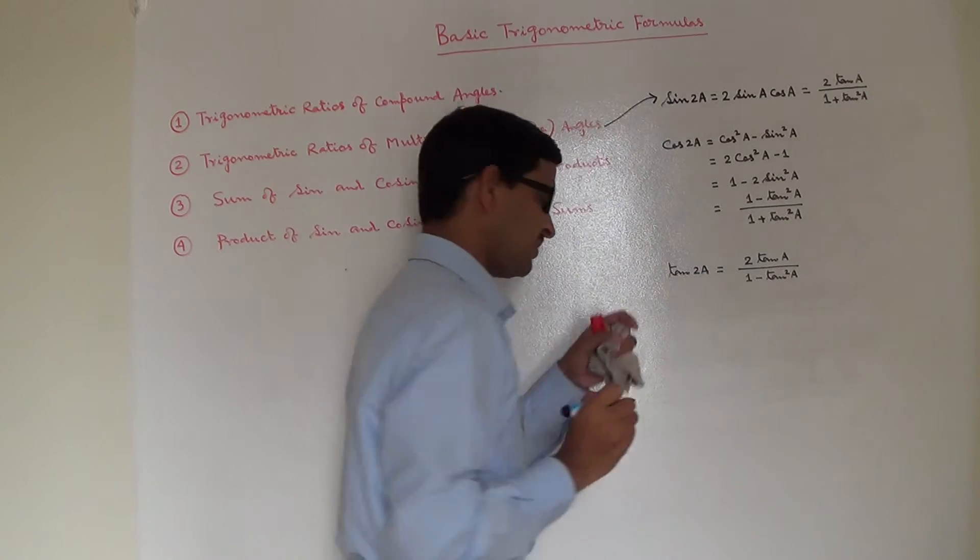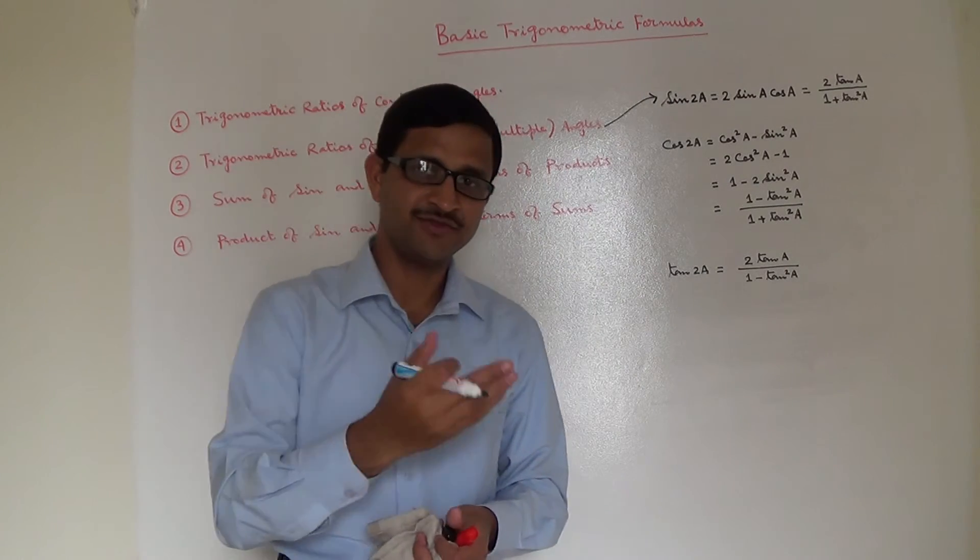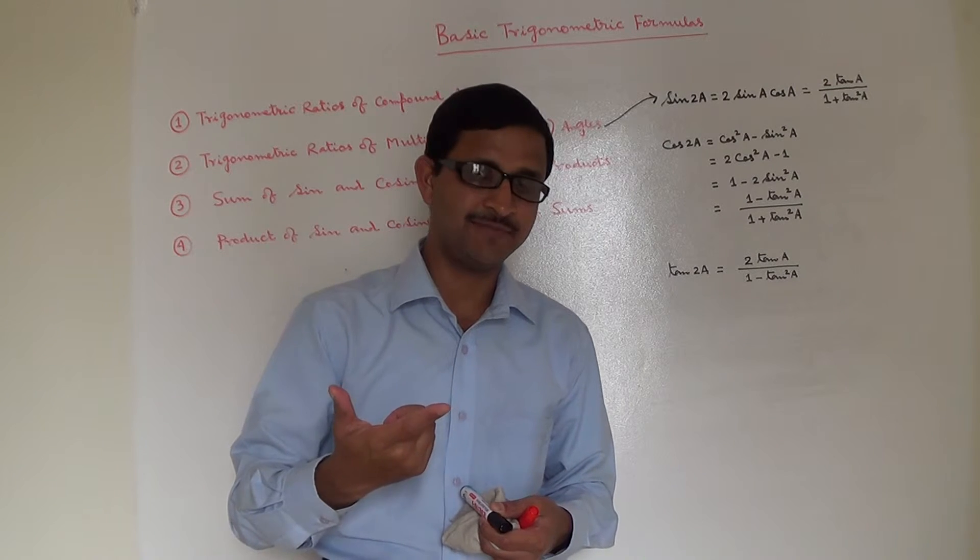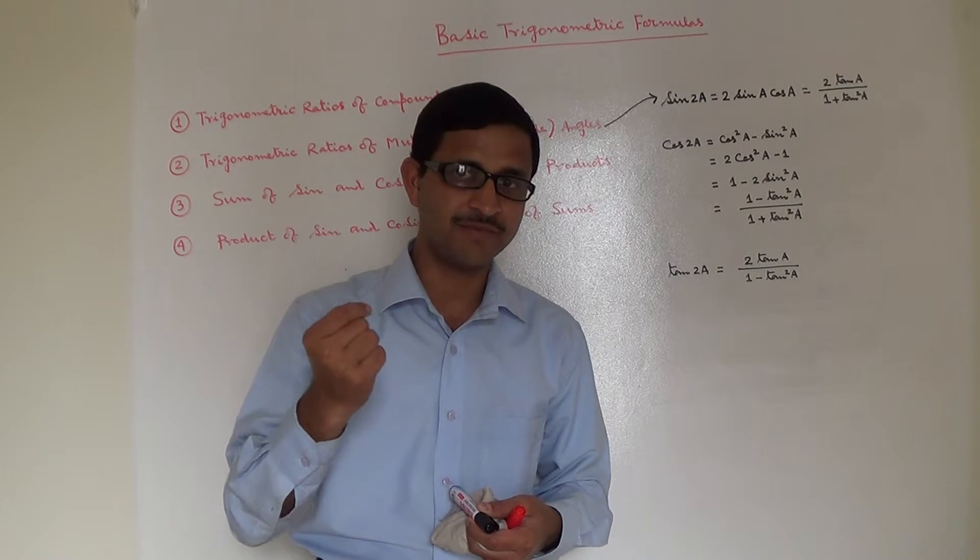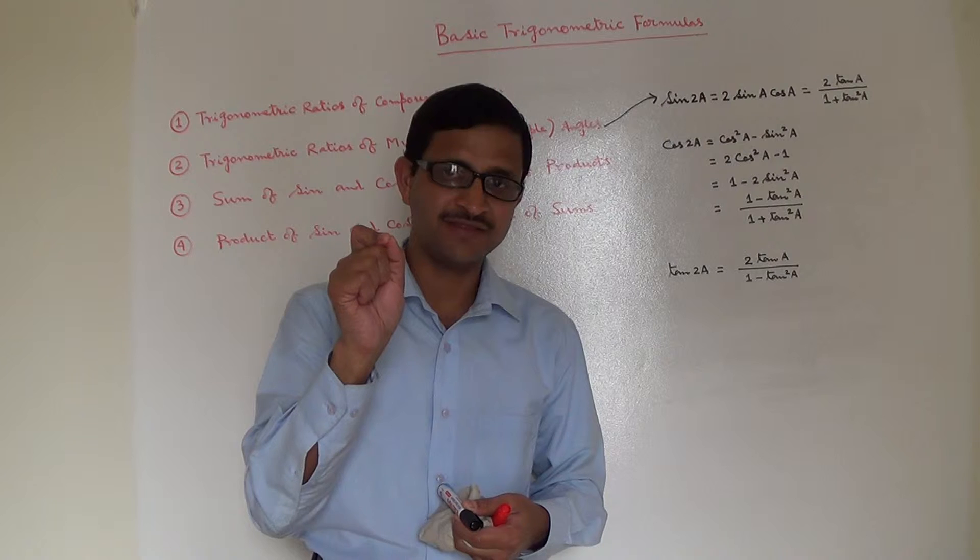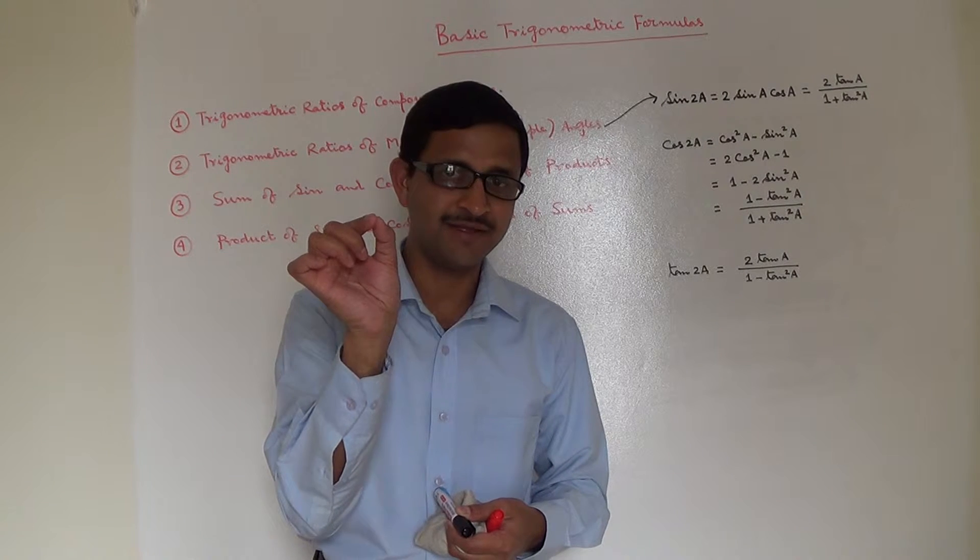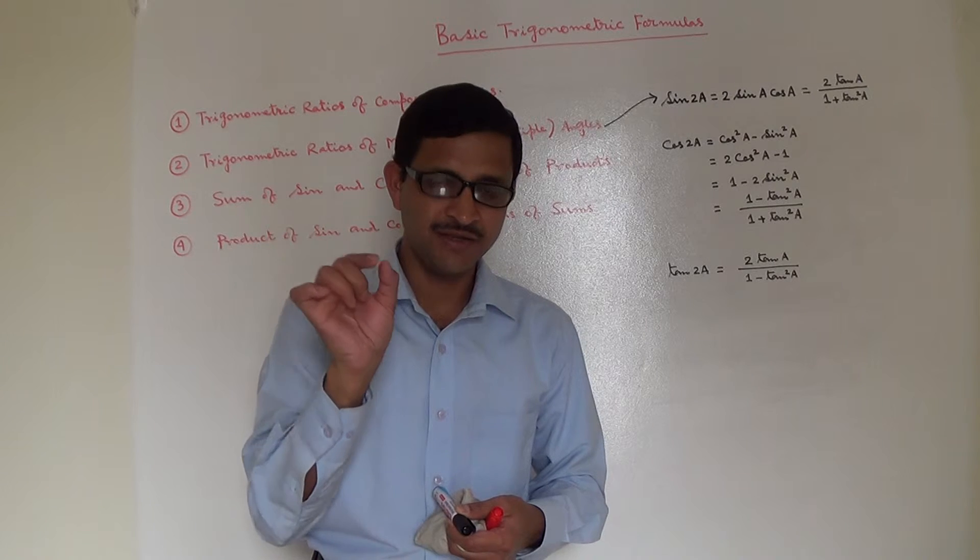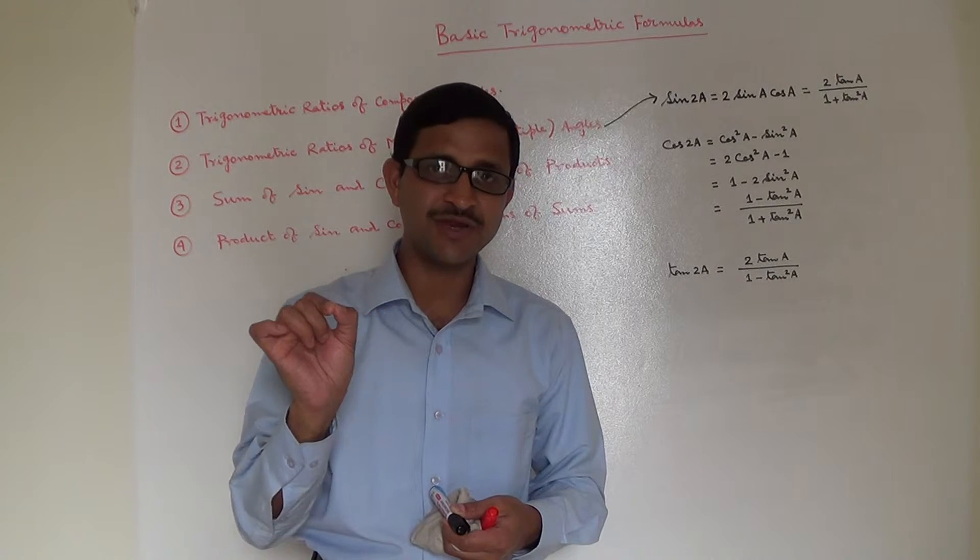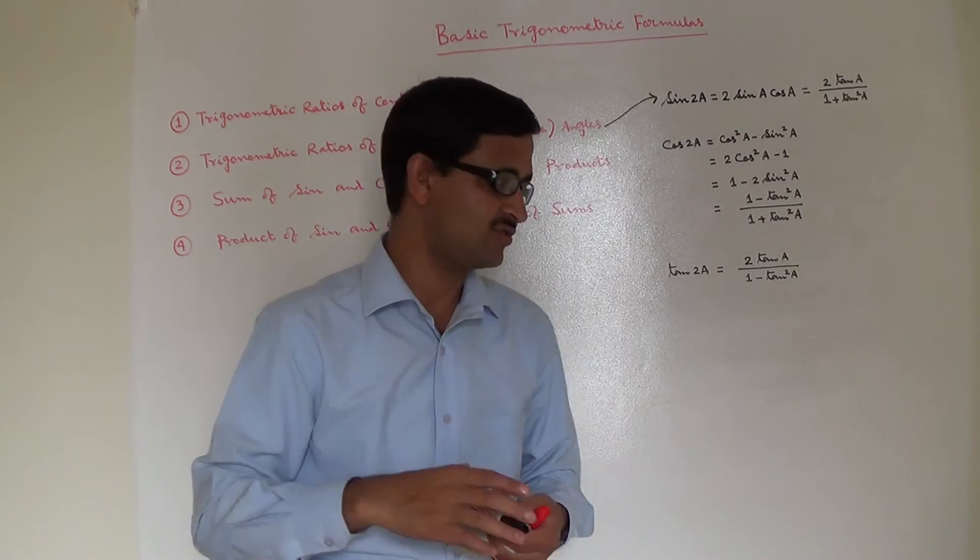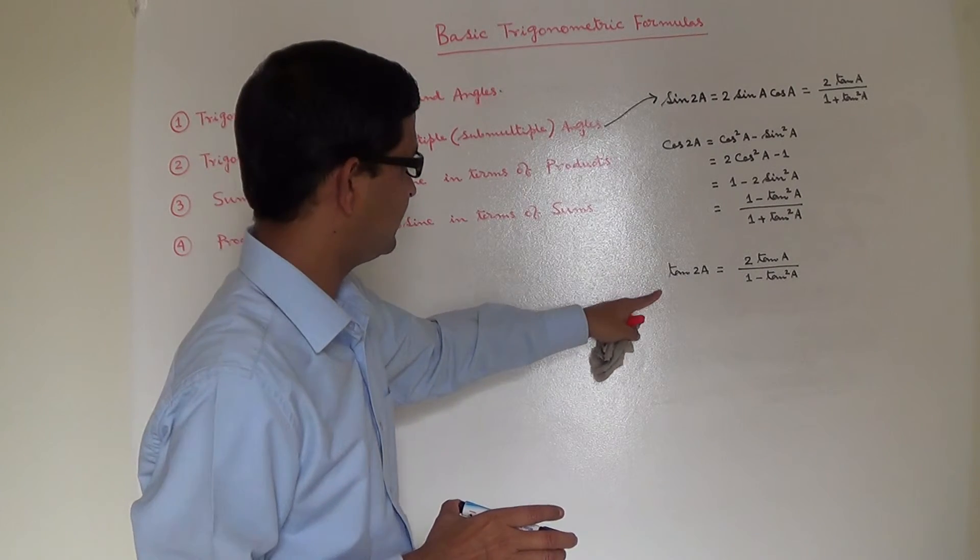And if you see, for tan 2A, just a few minutes back we learned what is tan of A plus B: tan A plus tan B by 1 minus tan A tan B. Now if you replace B by A, then you will get tan 2A equal to tan A plus tan A, that means 2 tan A, by 1 minus tan A into tan A. Since B equals A, that is 1 minus tan square A. So that is tan 2A.